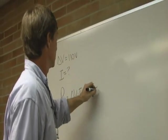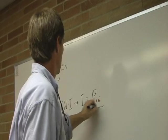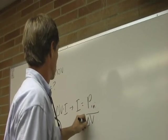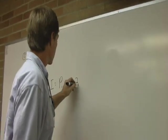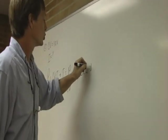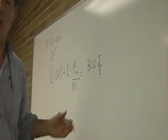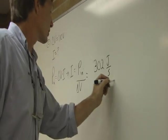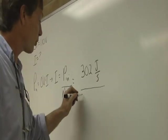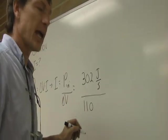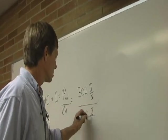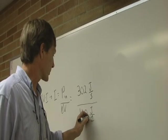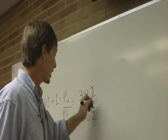So the current is equal to the input power over the voltage, which is 302 watts. And I'm going to say 302 joules per second, because that's what a watt is, a joule per second, divided by the voltage, which is 110 volts. And I'm going to say 110. I'm not going to say volts. A volt is the energy you give each charge. It's a joule per coulomb, energy per charge. And the joules will cancel.